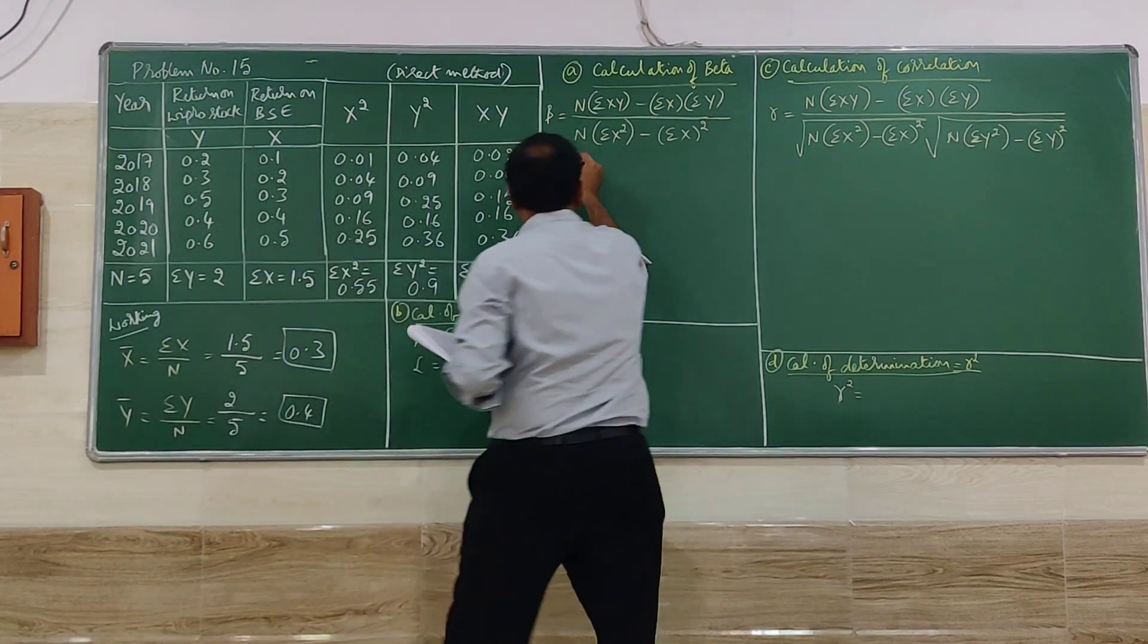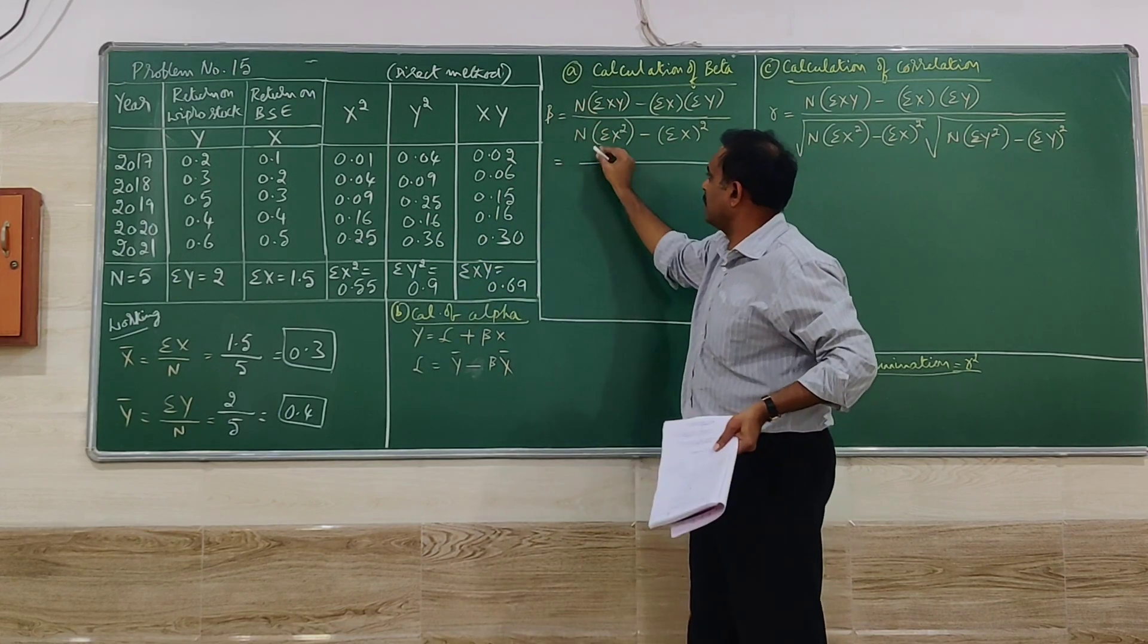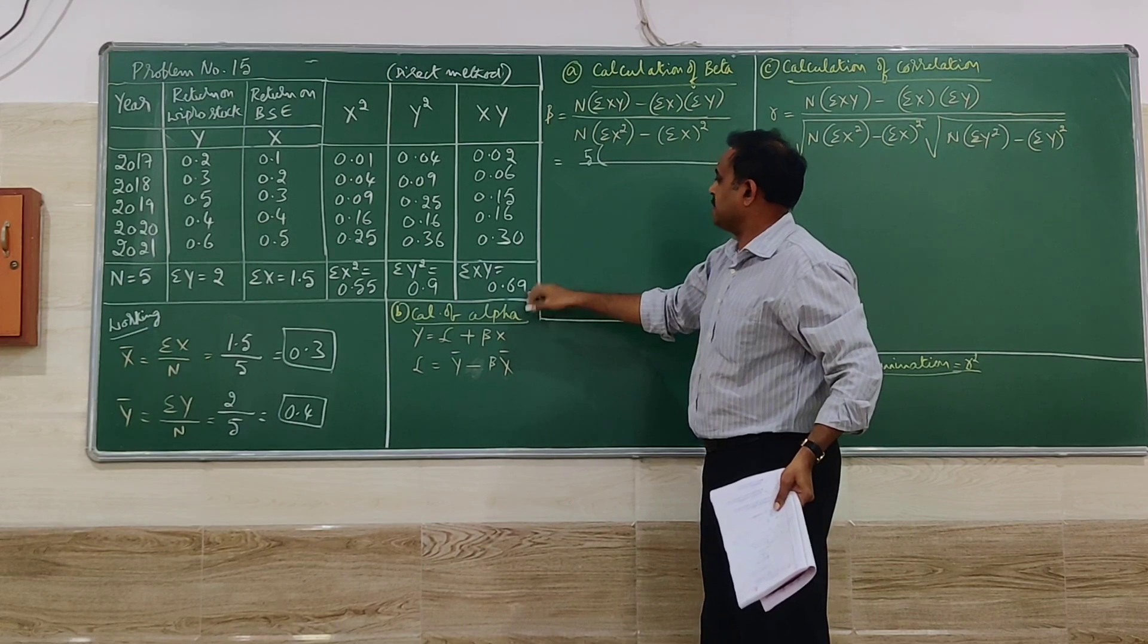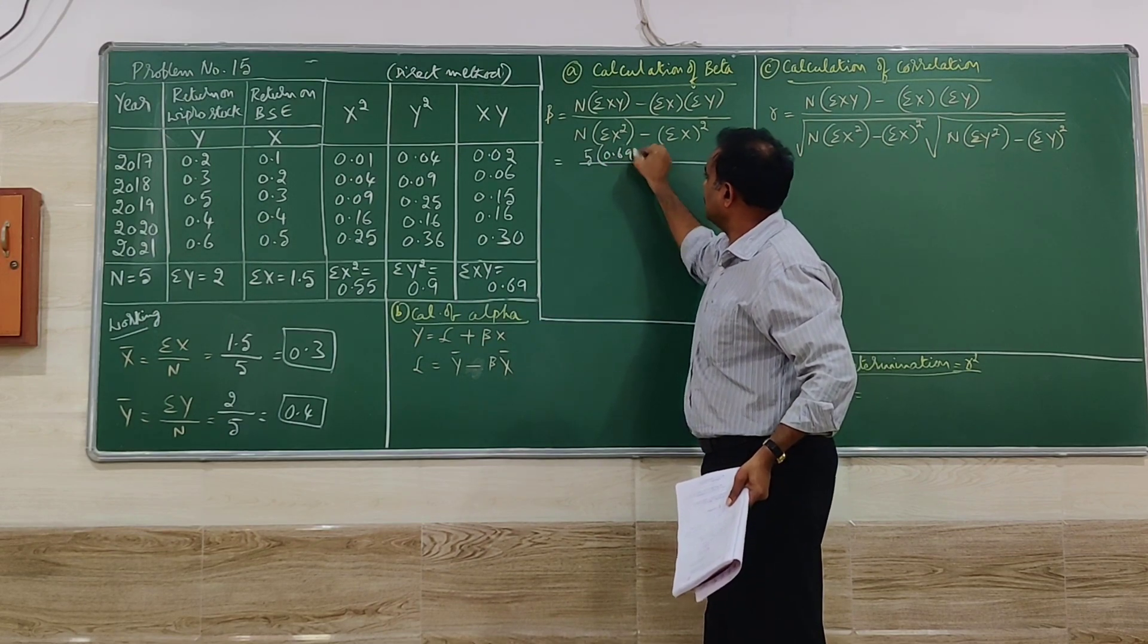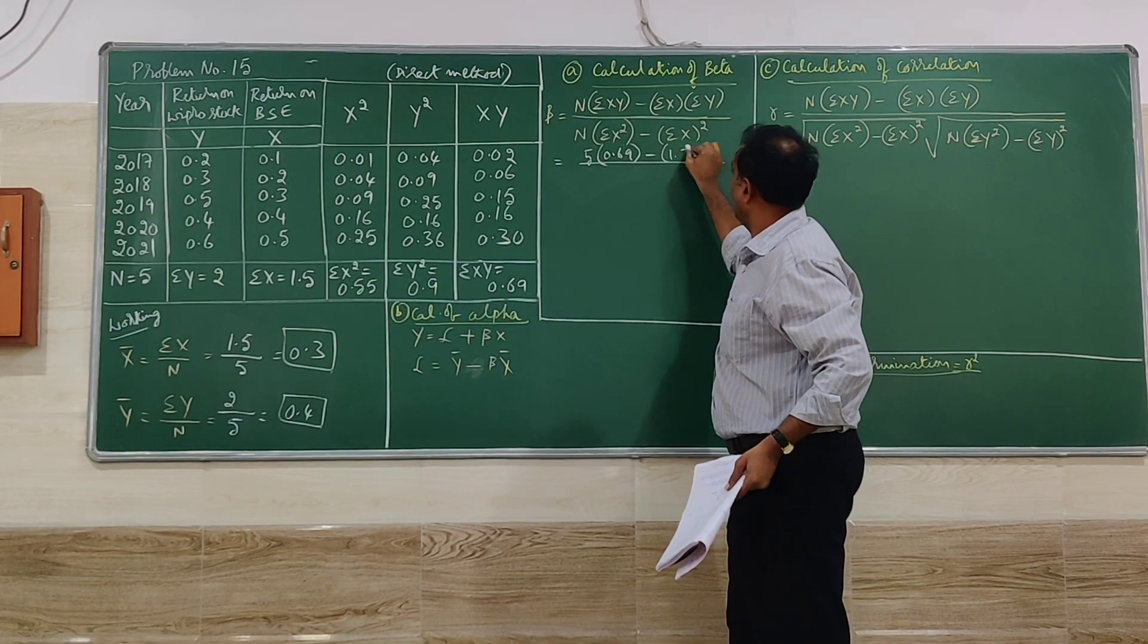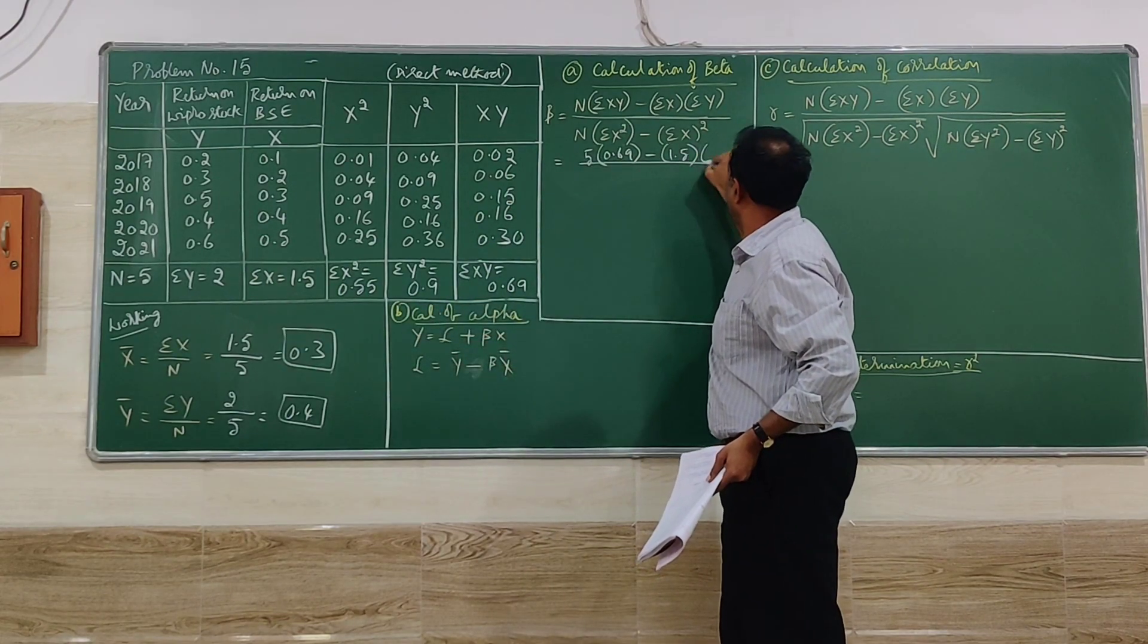Calculation of beta now. By substituting you have to be very careful again. Starting with N, N is 5. Summation XY 0.69. Summation X, 1.5. Summation Y, 2.